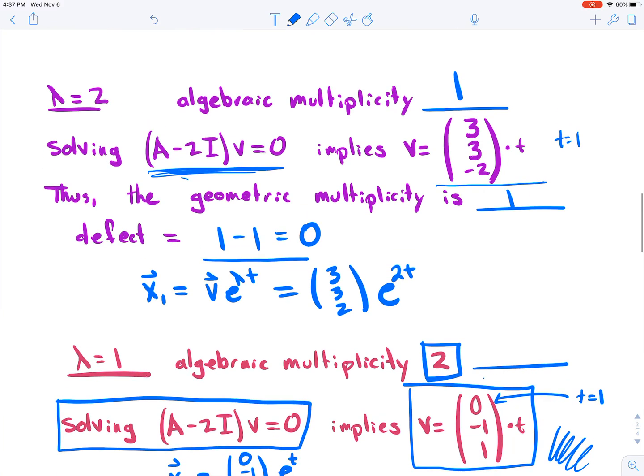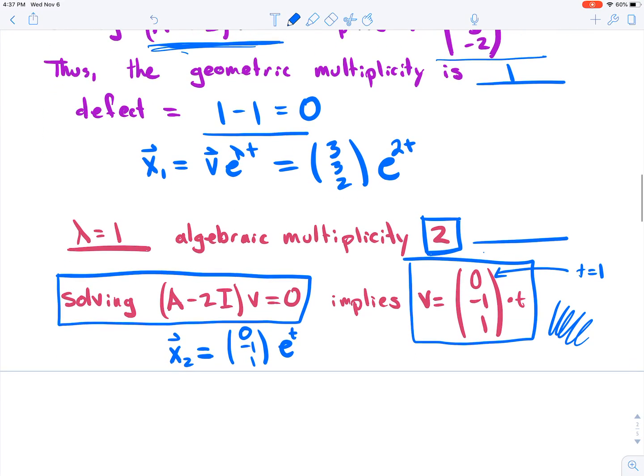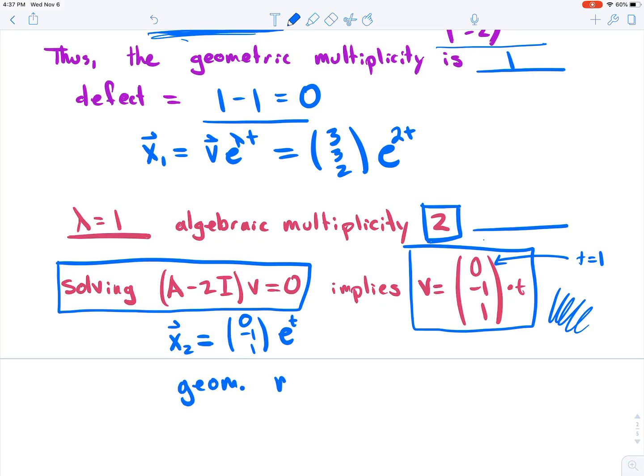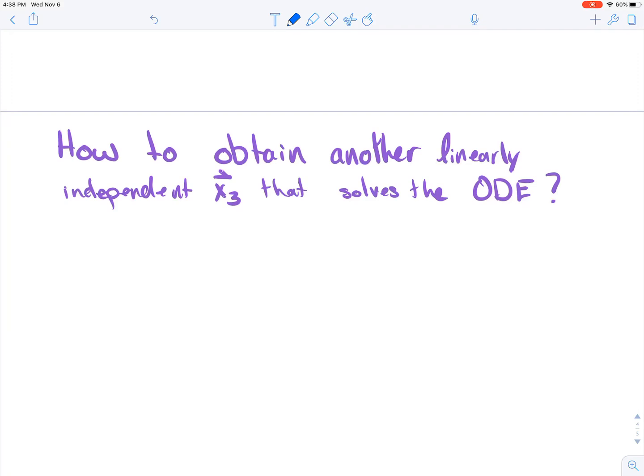So therefore, it also tells you that the geometric multiplicity for lambda equals 1 is going to be 1. So therefore, the defect, let me add a space here, add a new page. So we have concluded the following: the geometric multiplicity is going to be 1. Therefore, the defect is going to be 2 minus 1, which equals 1. So here lies our problem. If we had two linearly independent eigenvectors corresponding to lambda equals 1, we'd be good to go. But now we have a problem. So now we need to figure out how to solve this situation. We're going to be focusing on how to obtain another linearly independent vector x3. We have x1, we have x2. Now we need a third one since this is a 3 by 3 matrix.